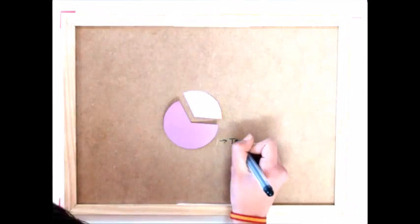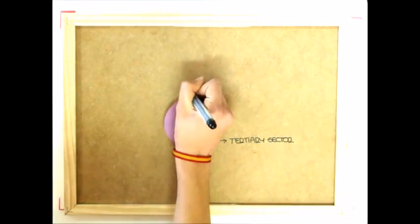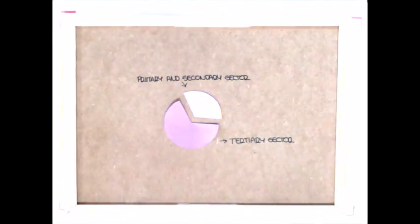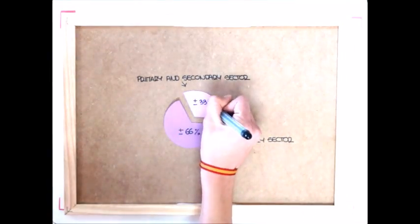In developed countries, such as Spain, the tertiary sector occupies two thirds, that is more or less 66%, against the primary and secondary sector, that are around 33%, which means one third.